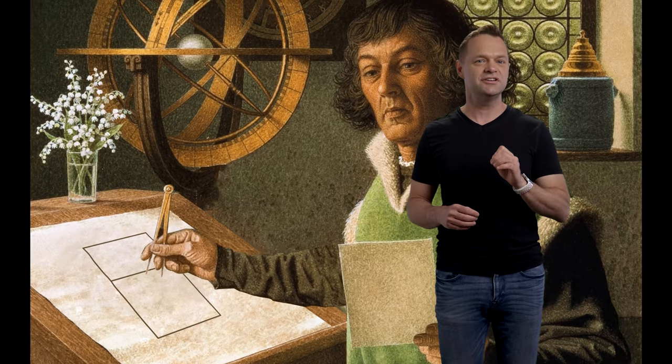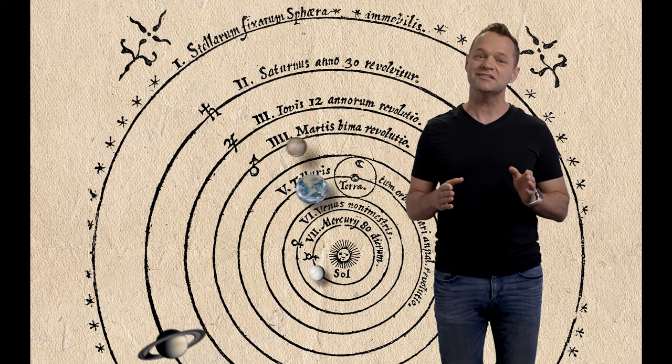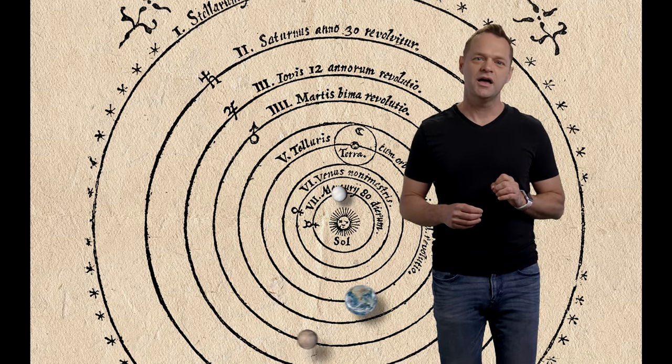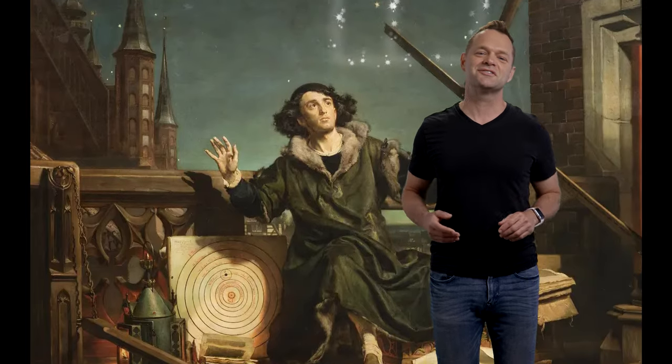The golden ratio didn't just influence artists, but scientists as well. In fact, Nicholas Copernicus used the golden ratio to form his idea of heliocentrism, a concept so advanced, it literally changed the way we saw our world and, of course, where it was in the universe.